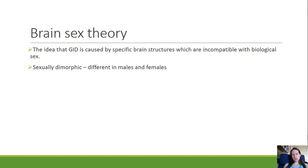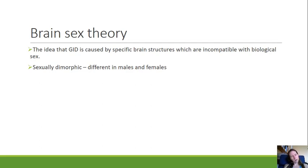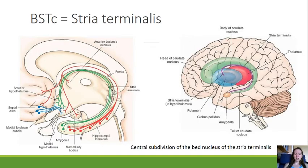Brain sex theory is the idea that gender identity disorder is caused by specific brain structures which are not in line with biological sex. Some brain structures are actually different in males and females — the correct term for that is sexually dimorphic. One of those structures is the stria terminalis, abbreviated in your booklet as BSTC, which stands for the bed nucleus of the stria terminalis.